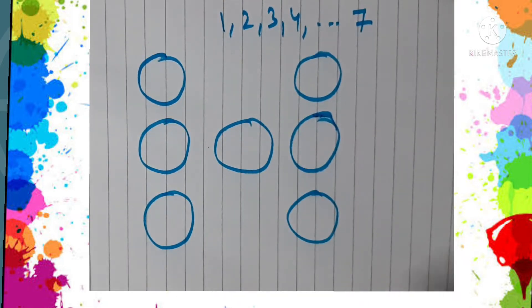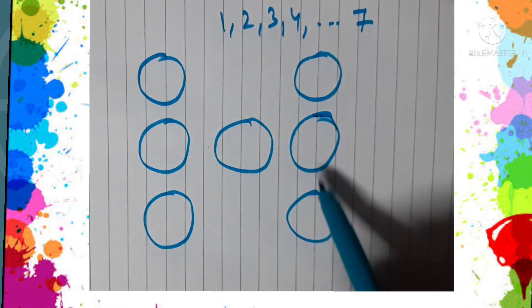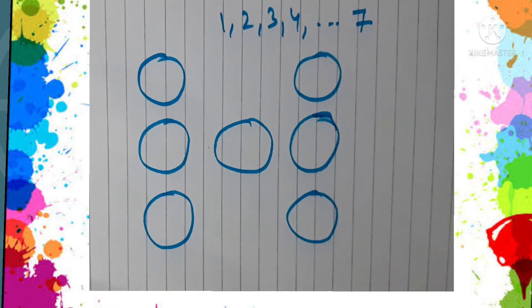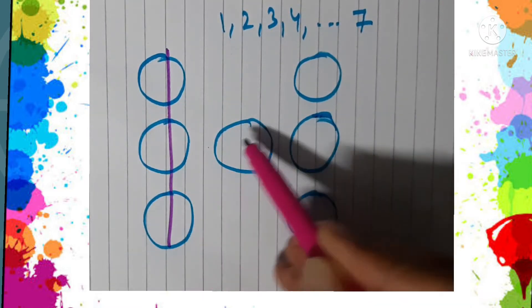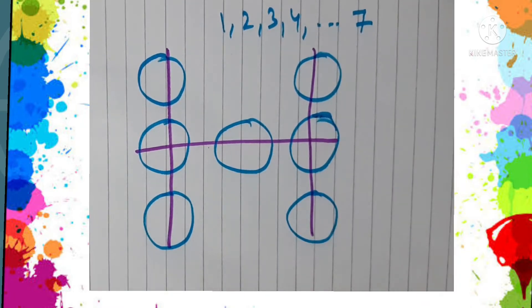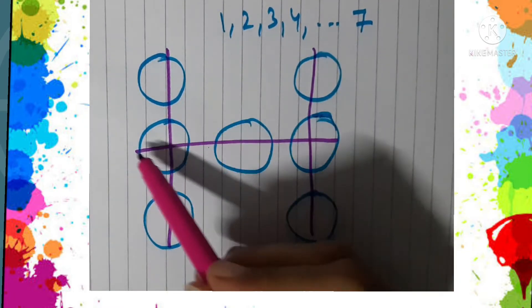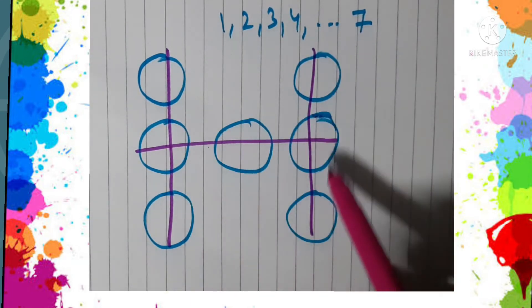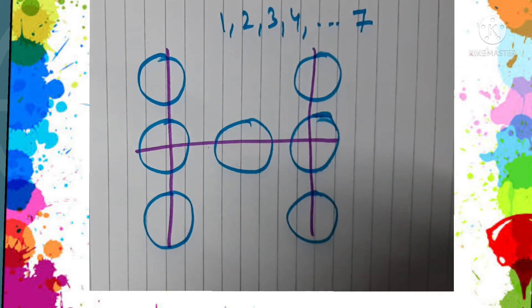There you can see there are seven circles, and we have to fill the digits in such a way that we get equal sum along the horizontal and vertical lines. This means the sum of the three numbers on the horizontal line and the sum of the three numbers on each of the vertical lines is the same. I hope you are trying.